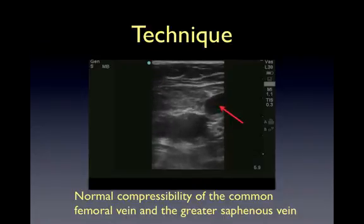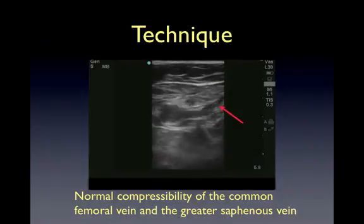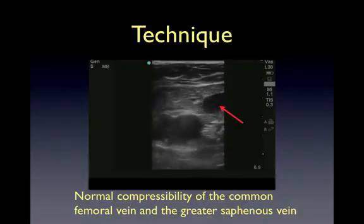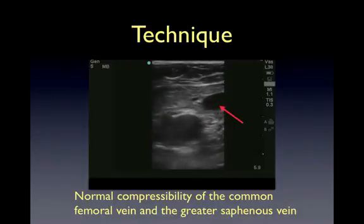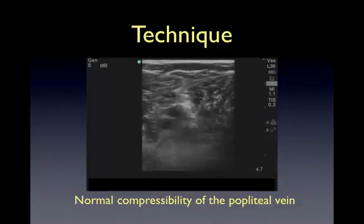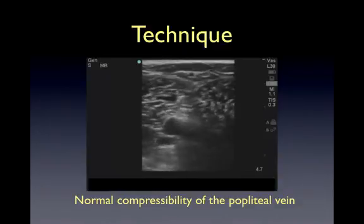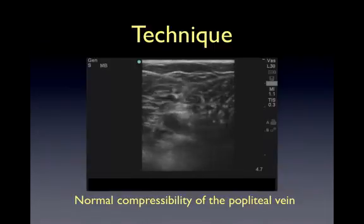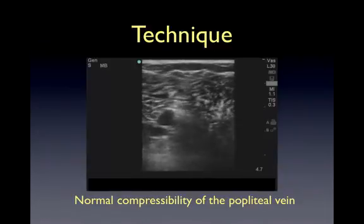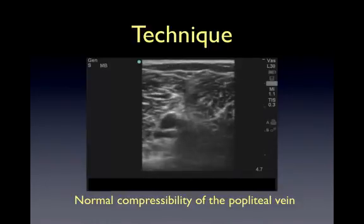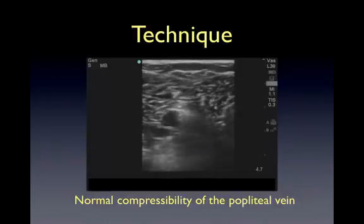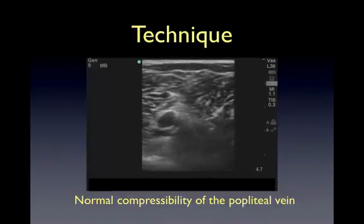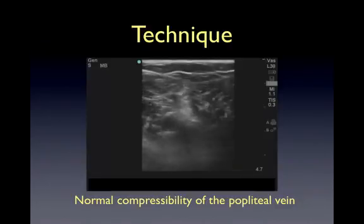This is a video of normal compressibility of the common femoral vein and the greater saphenous vein. Here you can see the anterior and posterior walls of the veins are completely touching. Scan distally along the popliteal vein in the popliteal fossa — here the vein is superficial to the artery, closest to the probe. Apply gentle but firm compression every 1 to 2 centimeters until the trifurcation of the popliteal vein. This is a video showing normal compressibility of the popliteal vein, where the anterior and posterior walls of the vein are completely touching.